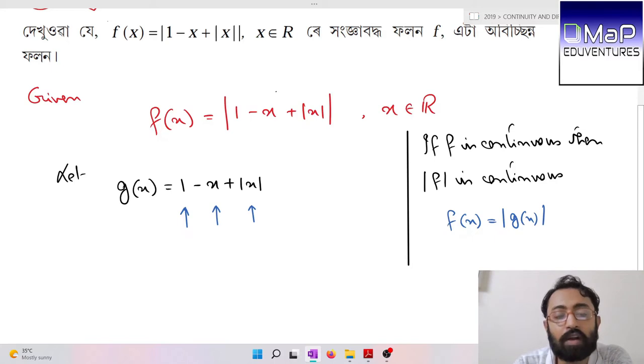|x| is also continuous. The sum of continuous functions (addition or subtraction) is continuous. So the result should be continuous.